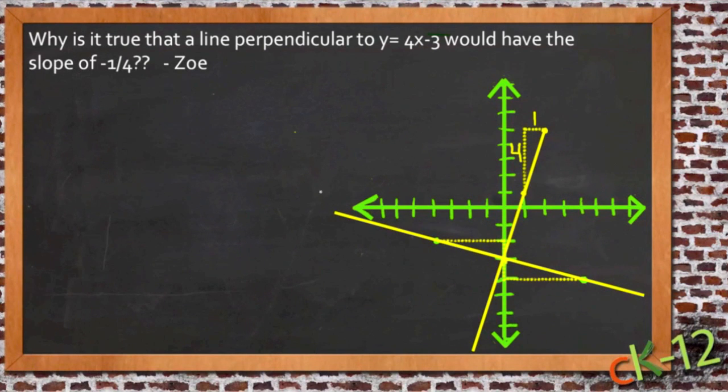The topic of this lesson was determining parallel and perpendicular lines, and I had a question sent in by a student named Zoe that I'm going to use to illuminate that topic. She says, why is it true that a line perpendicular to y equals 4x minus 3 would have the slope of negative one-fourth?